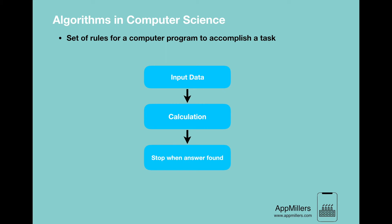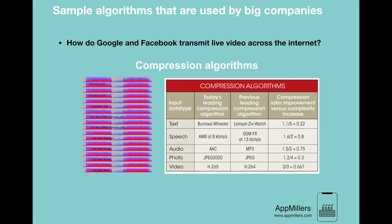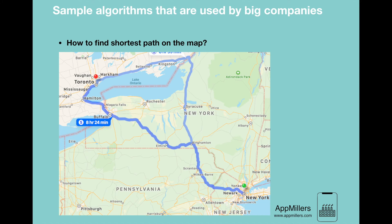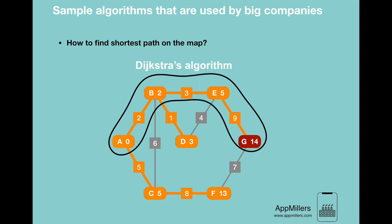Let's look at a few famous algorithms used by big companies. You might be interested in how Google and Facebook transmit live video across the internet — the answer is they use audio and video compression algorithms. Or you might be interested in which algorithm is used to find the shortest path on a map. These are graph algorithms used in Google, Apple, and Microsoft maps to find the shortest path between two locations.